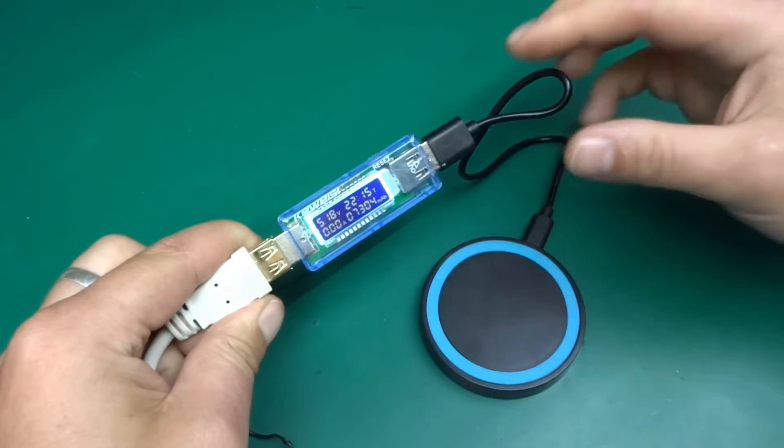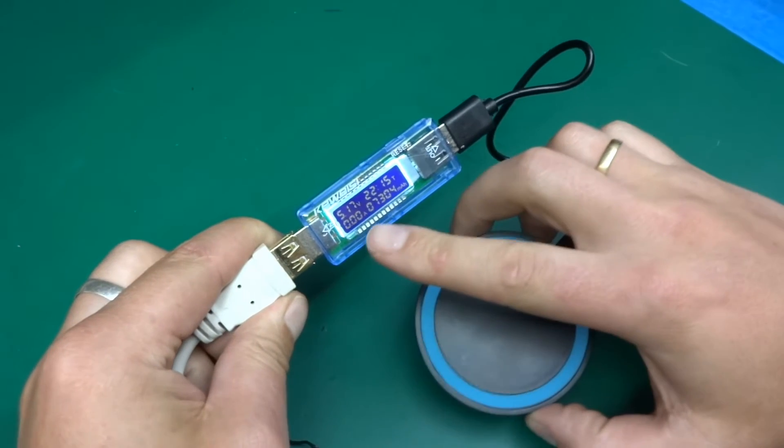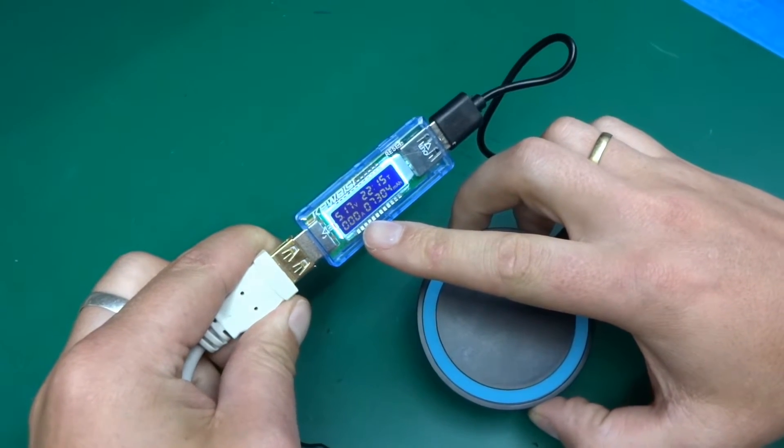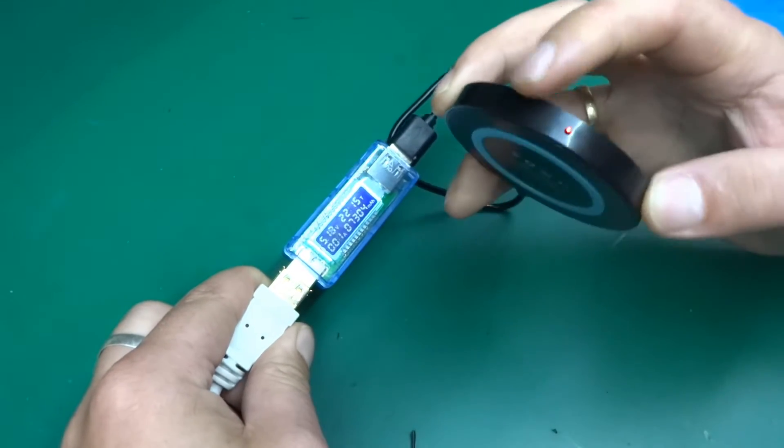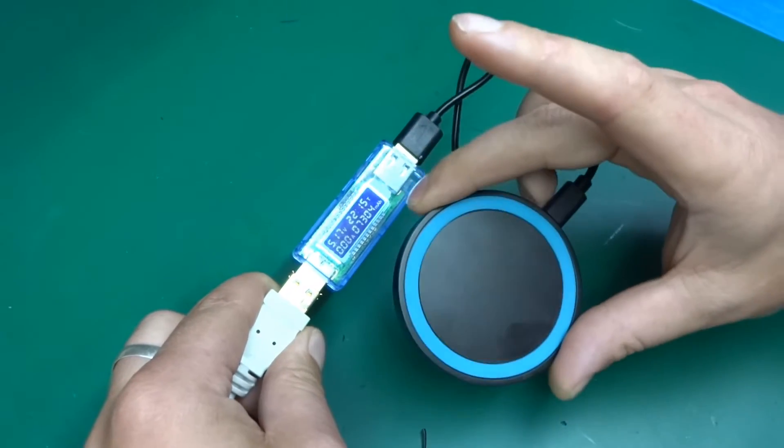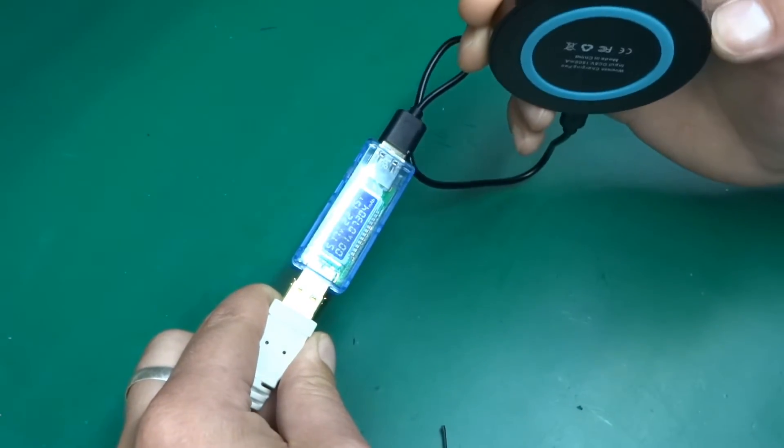And after plugging it in, just like in the previous video, we've got pretty much the same story. Just drawing a little bit, just under 10 milliamps in the standby mode. And we've got a little red LED shining from the opposite side, from the side opposite to the USB port, telling us that it's fully powered on.